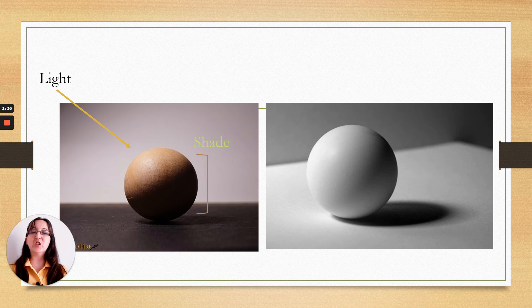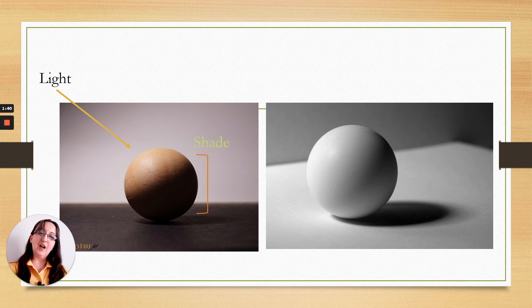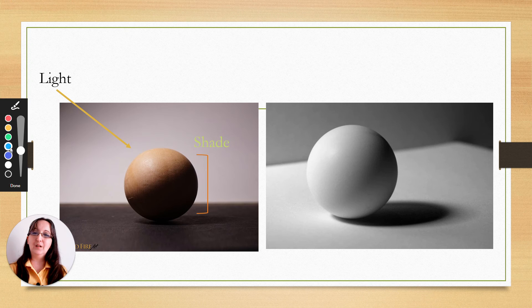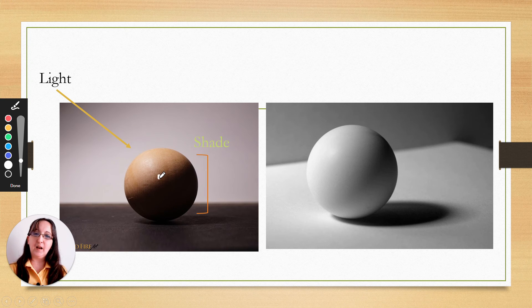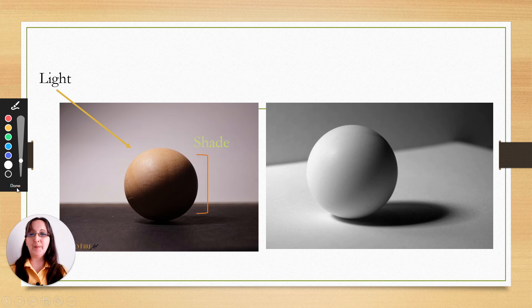We know the light is coming up from that direction. We can see the highlight on the sphere. We can see the shade which is on the opposite side of the light and we can see how it is going from here is a lighter tone and it is getting darker and darker and darker as we get further away from the light source.